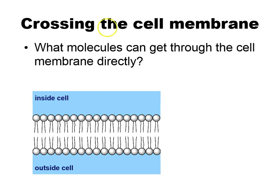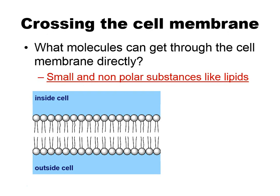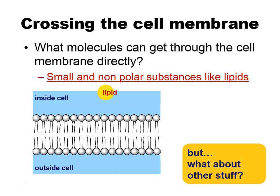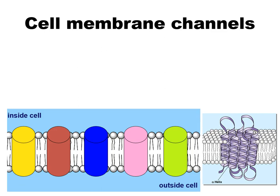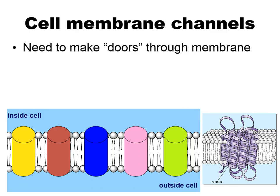In order to cross the cell membrane, you've got to get through this layer. Some molecules are going to be able to just go through directly — they have to be really small and nonpolar to do that, because they need to fit through and get through this nonpolar layer. That's only going to be things like lipids or certain gases like oxygen and carbon dioxide. Sugars, amino acids, even water and salts and waste products are going to have a really hard time getting through the phospholipid bilayer because they're either too big or they're polar. So we have membrane channels — special proteins that act like doors through the membrane, allowing materials to pass through that layer.